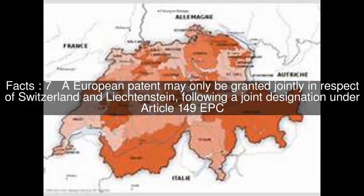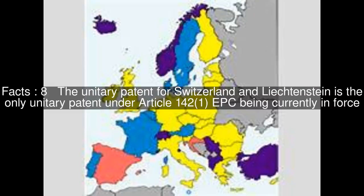A European patent may only be granted jointly in respect of Switzerland and Liechtenstein, following a joint designation under Article 149 EPC. The unitary patent for Switzerland and Liechtenstein is the only unitary patent under Article 142 EPC being currently in force.